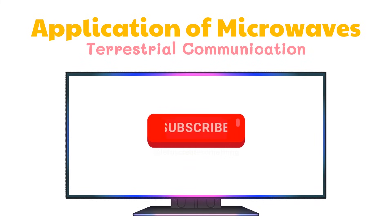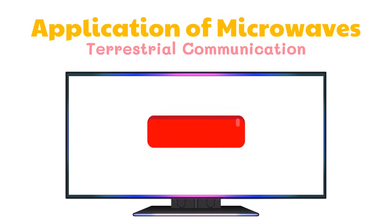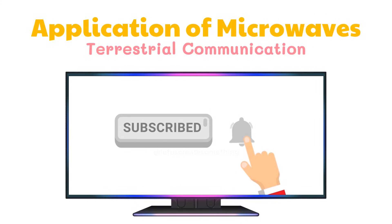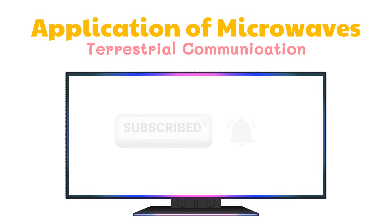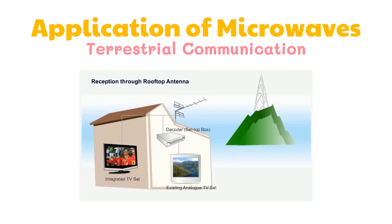A lot of people now resort to cable TV for news, entertainment, and educational programs because of its wide range of channels and clearer sound and picture. Some cable companies also provide internet access to users. Microwaves are used to transmit television news coverage from mobile broadcast vehicles back to the station. The news crew can also set up a small antenna to send signals to a communications satellite — this is how news is broadcast and watched live around the world.